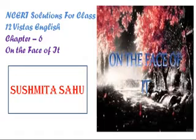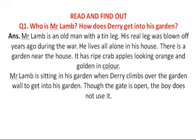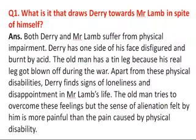Ye ek samanta hai dono mein jo unko dost banaati hai. Aur phir kya conversation hota hai aur kaise woh dono dost ban jaate hain — ye hai iski story. Now the question answers: Who is Mr. Lamb? How does Derry get into his garden? Mr. Lamb is an old man with a tin leg. Derry climbs over the garden wall to get into his garden, though the gate is open — the boy doesn't use the gate.